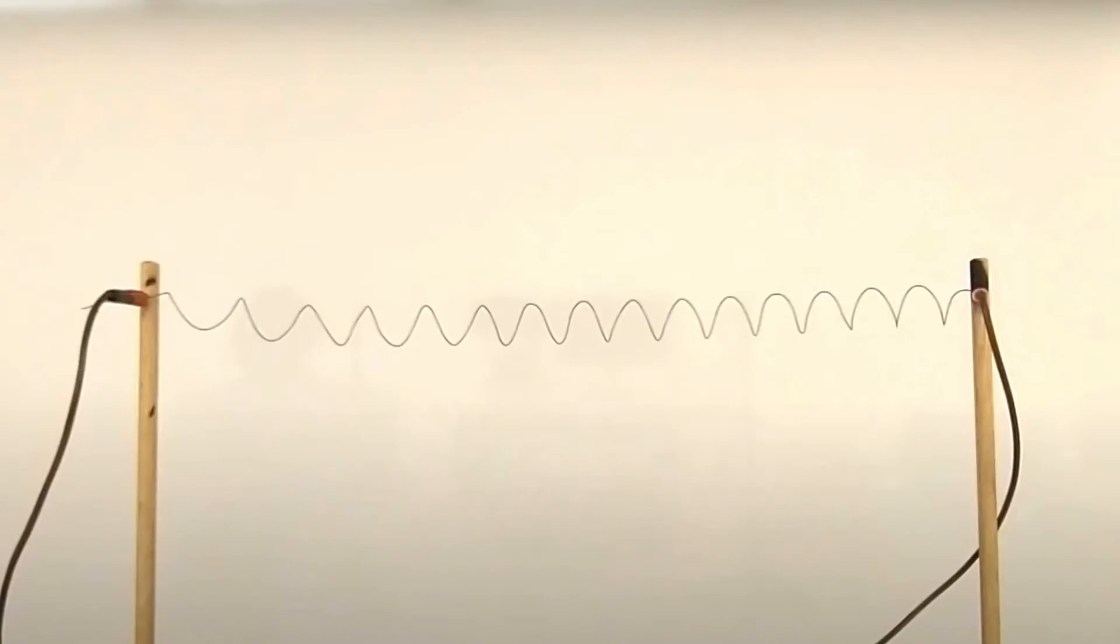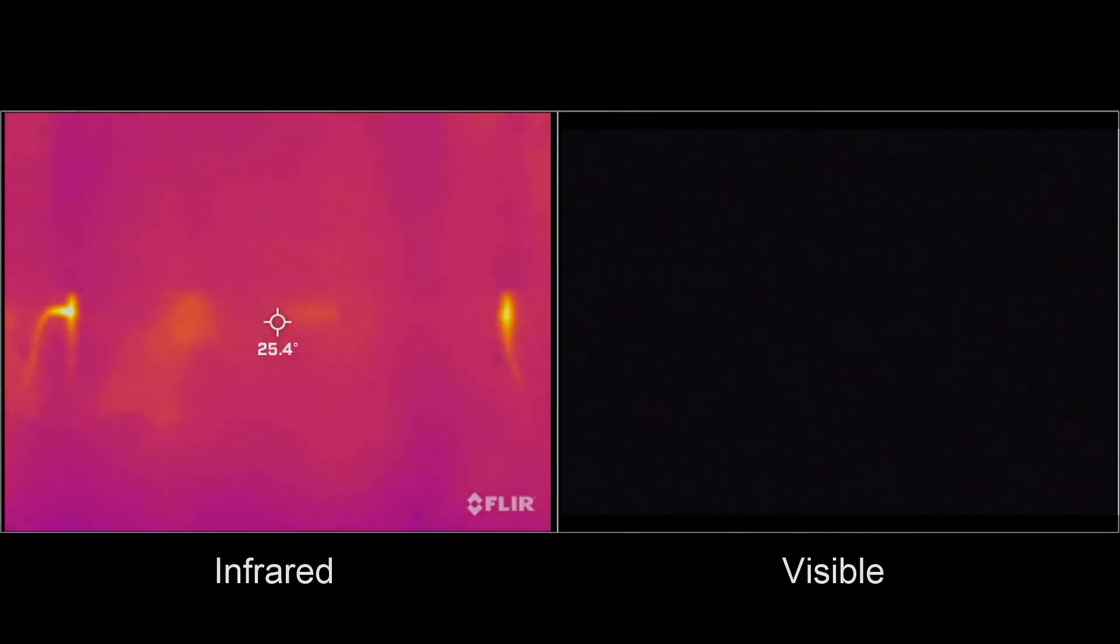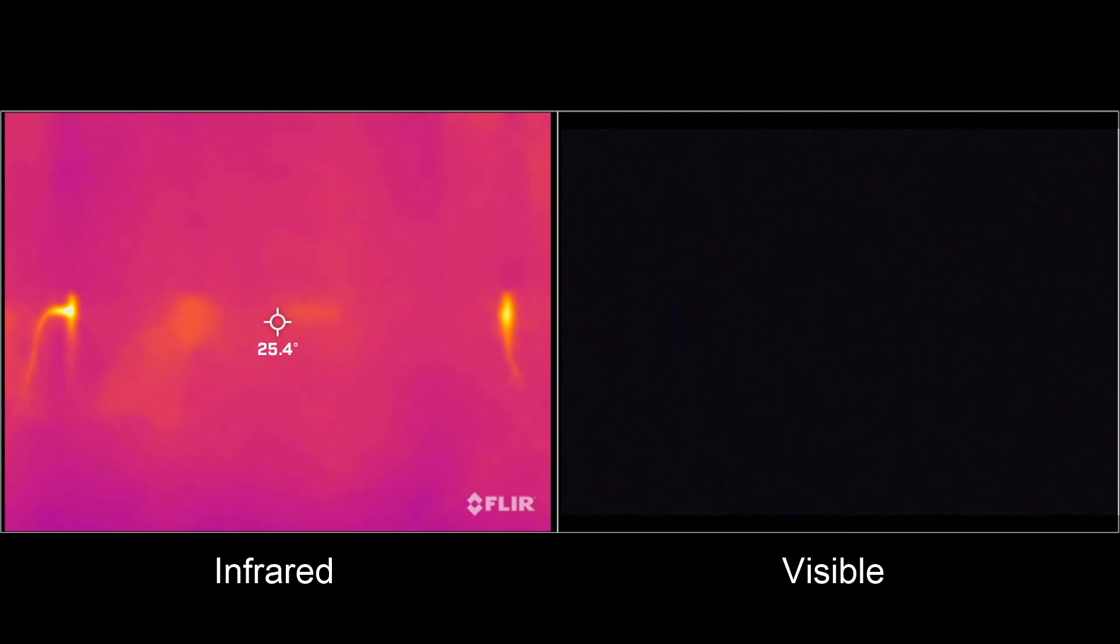We have here a coil of wire connected to a source of electricity. Let's turn off the lights and observe the wire in both visible and infrared light. The glow you see right now in infrared is radiation from the room. In a moment, we're going to run a current through the wire. What do you think you will see?